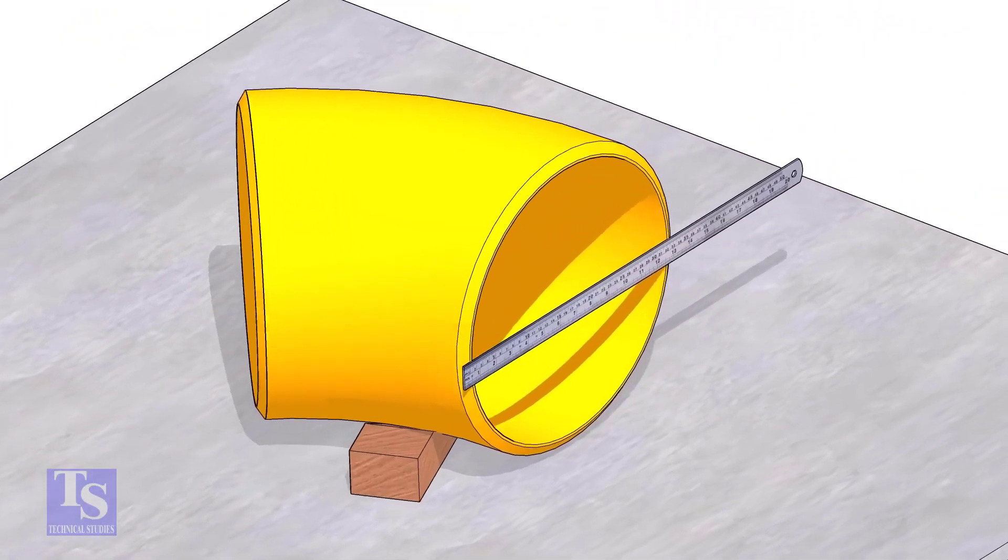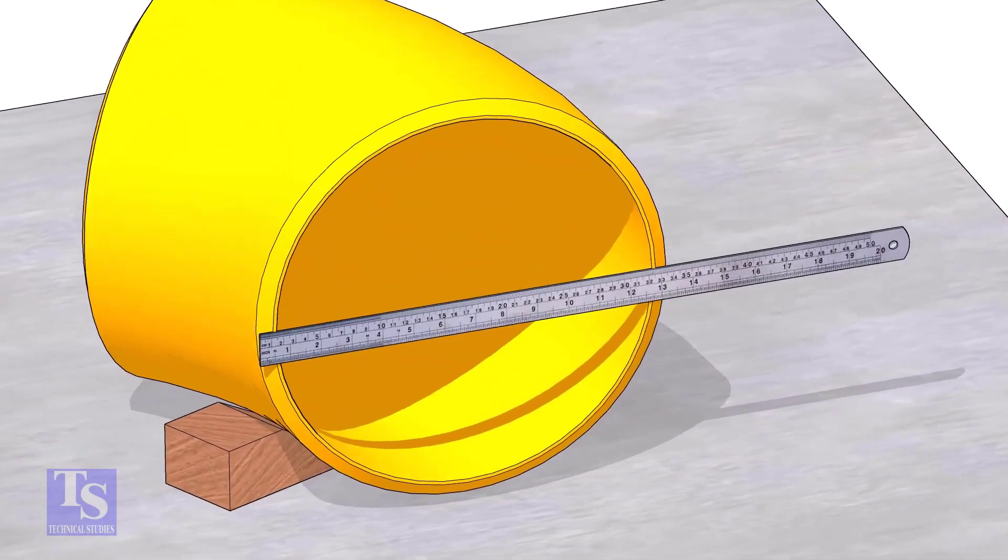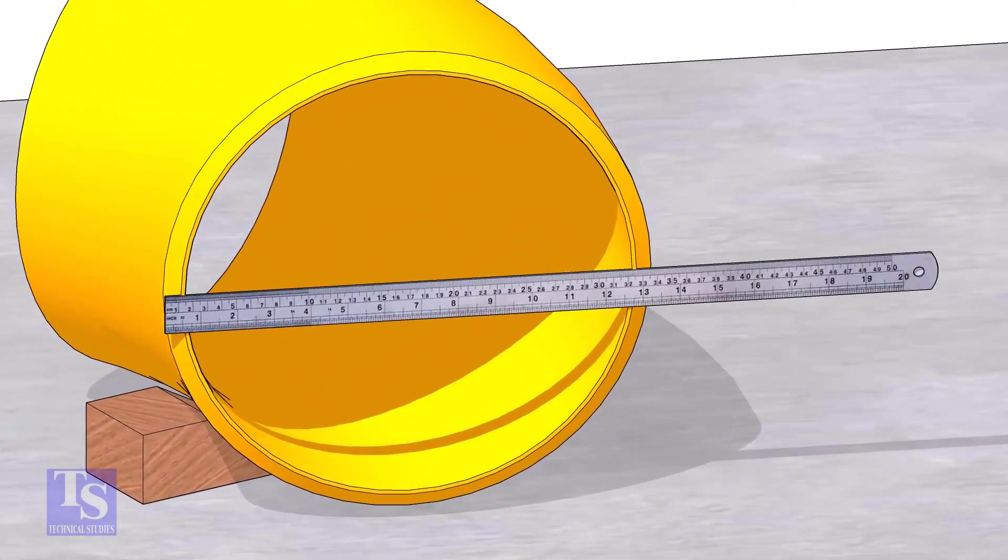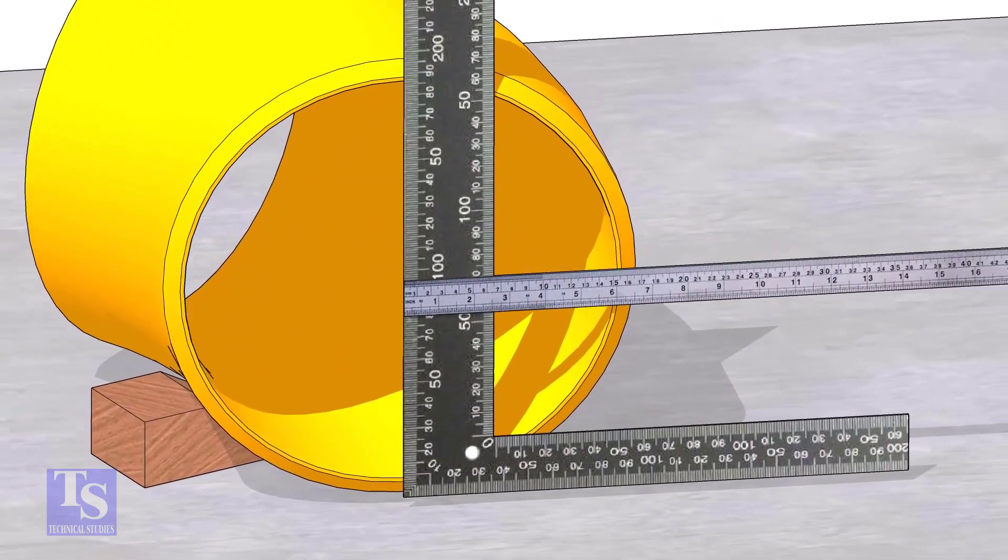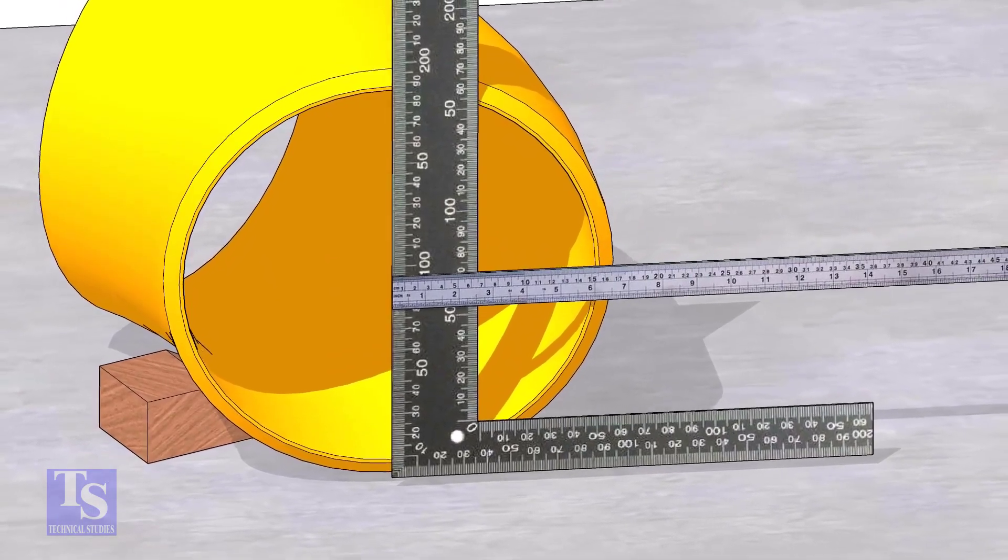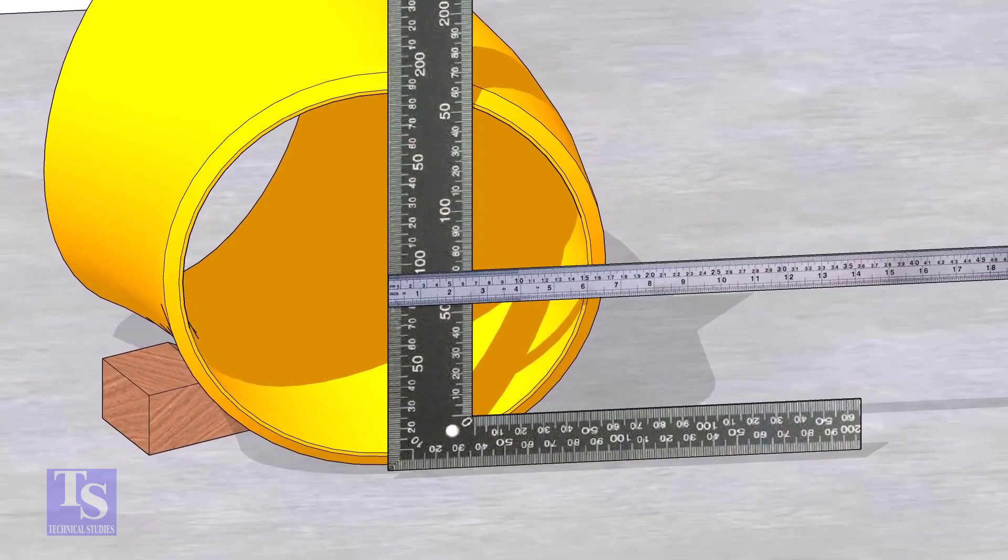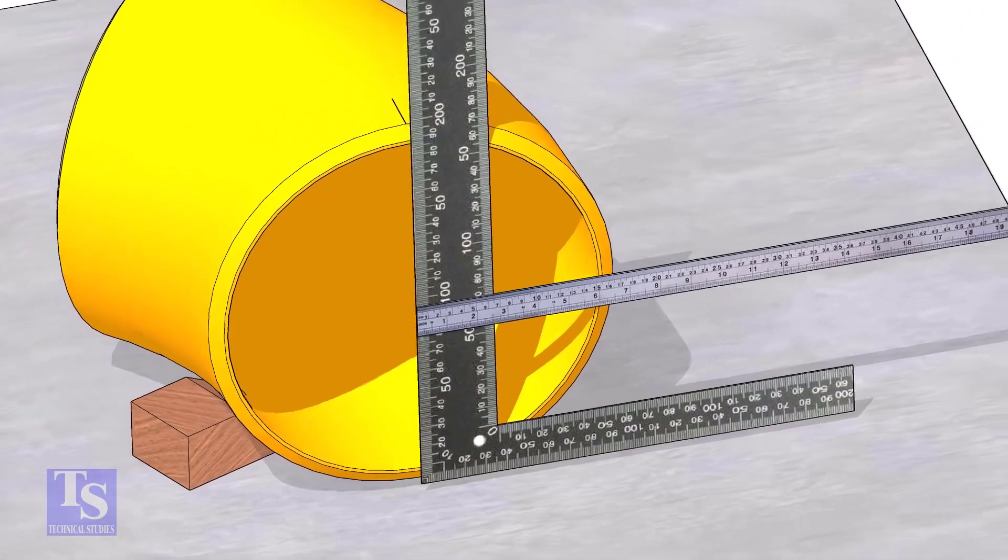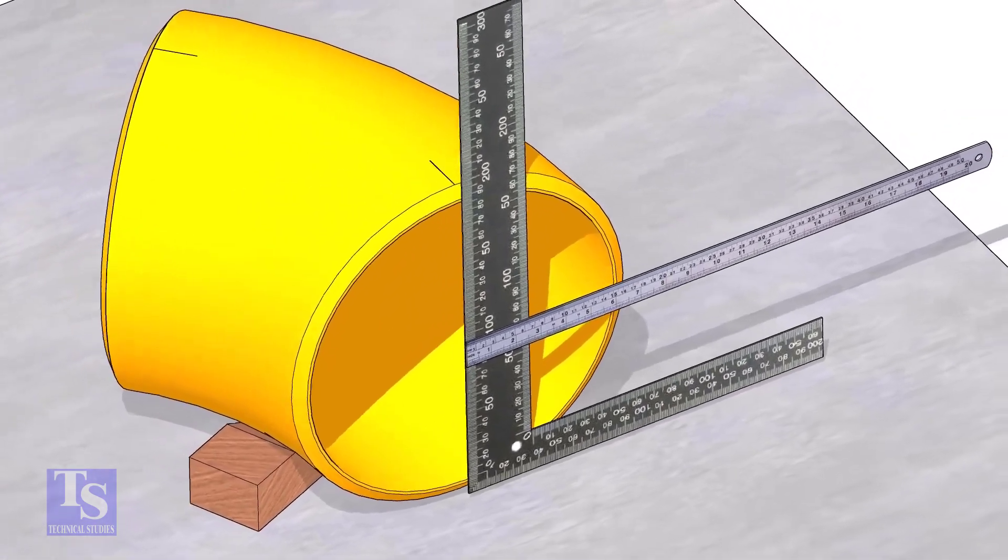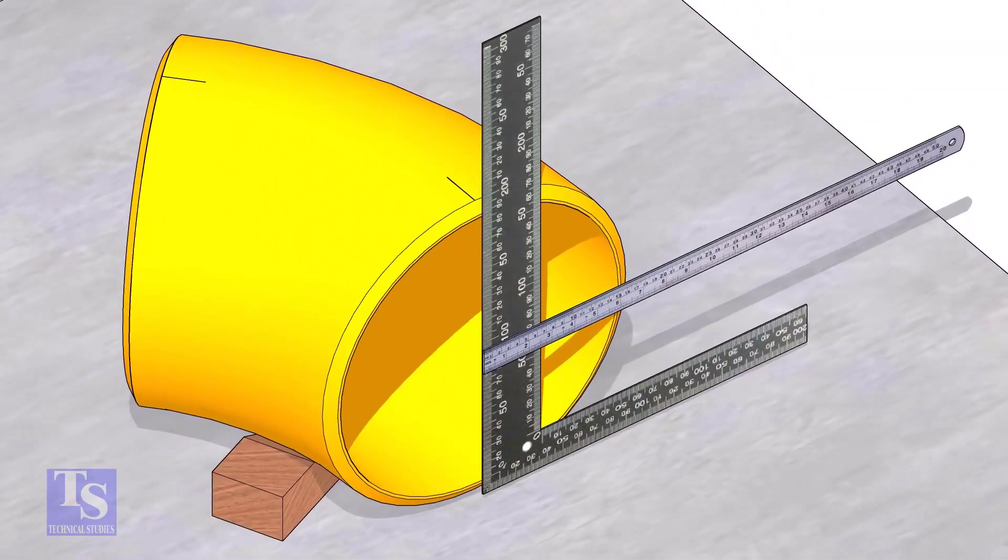Measure the OD. Put a right angle at the middle of one face of the elbow. Make sure the edge of the right angle is exactly at the center. Draw a line where the right angle edge touches the elbow face on the top and bottom side.